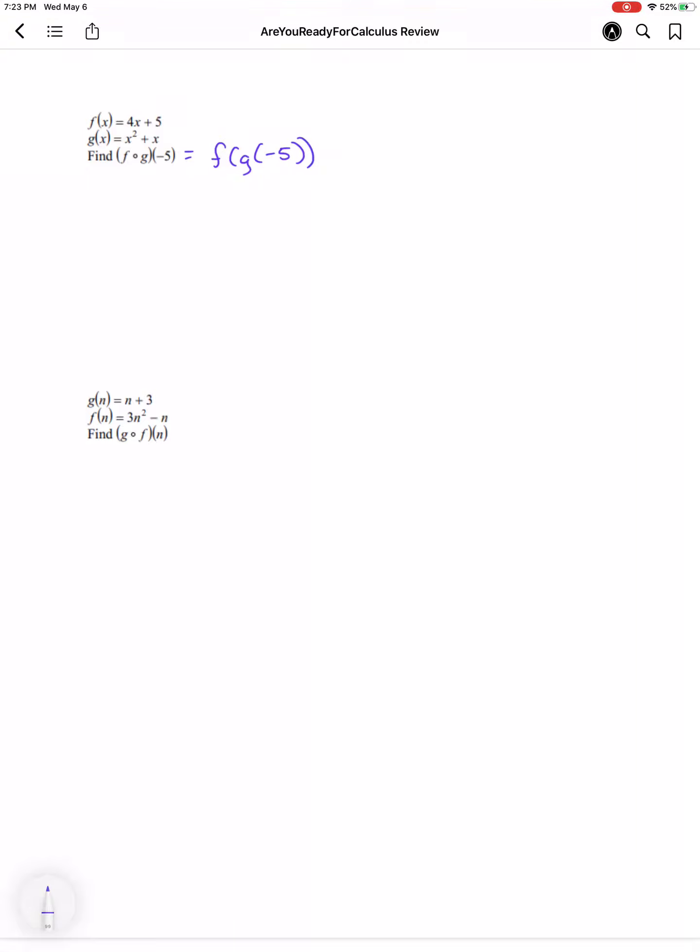So remember, it's telling us to input into the function g first. So g of negative 5 equals negative 5 squared plus negative 5, which equals 25 minus 5, or 20.